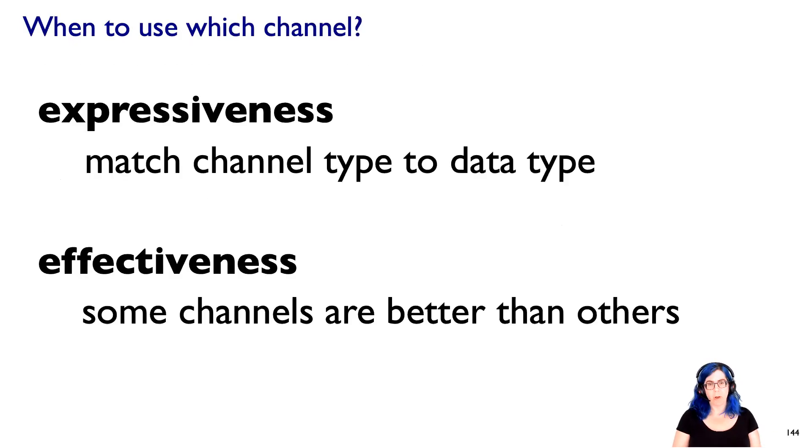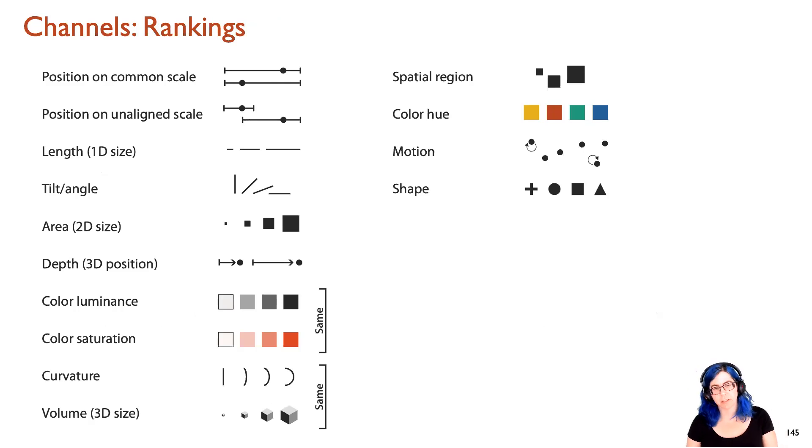When do we use which channel? A key idea - these principles of expressiveness and effectiveness that date back to Jock Mackinlay's thesis in the 80s - is that we want to match the type of the channel to the type of the data, and that some channels are better than others. Expressiveness and effectiveness. Let's dive in and understand that.